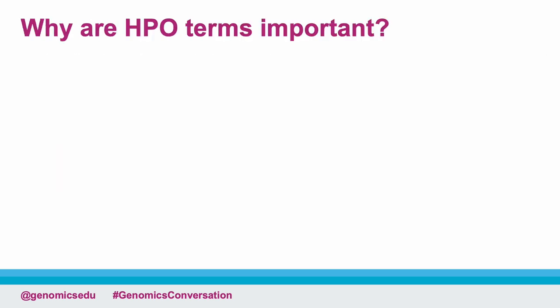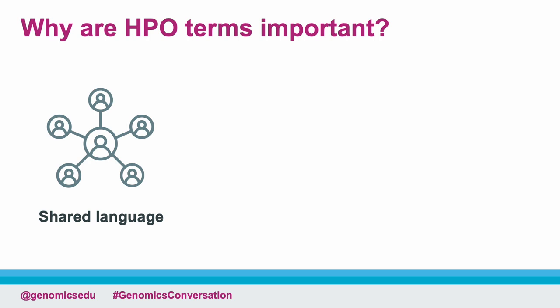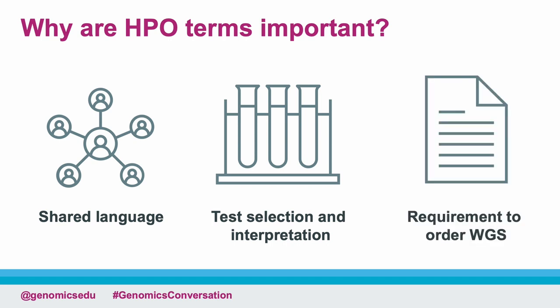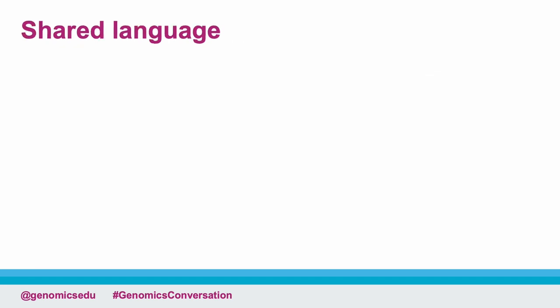So why is using consistent HPO terms important for patient care? Use of HPO terms ensures that we are all speaking the same language when describing a patient's phenotype, which avoids confusion and miscommunication. This aids in the selection of appropriate genomic tests and the clinical interpretation of any variants identified. It's also an official requirement when ordering whole genome sequencing tests. HPO terms provide clinicians with a shared language to describe phenotype.